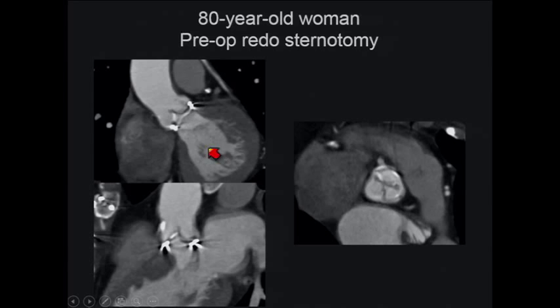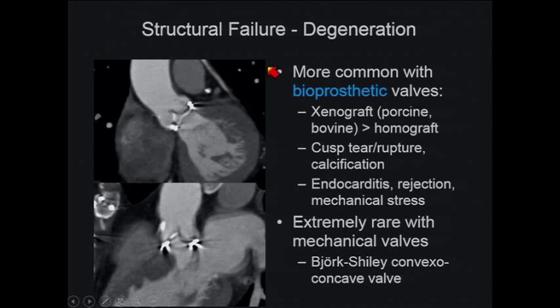Structural degeneration is seen with bioprosthetic valves, more from xenografts than homografts. Companies are improving fixation processes to reduce this complication in newer valve models. You can also see tear or rupture of the valve leaflets. In general, we see this failure of bioprosthetic valves less in patients over 65 years old — one theory is that these patients are less active, placing less stress on the valves.